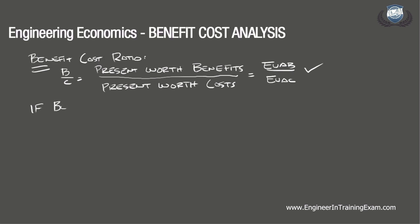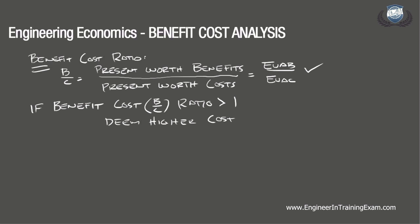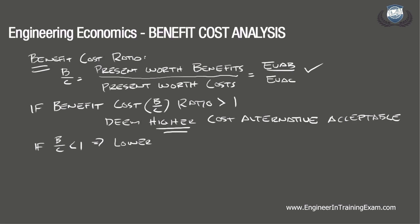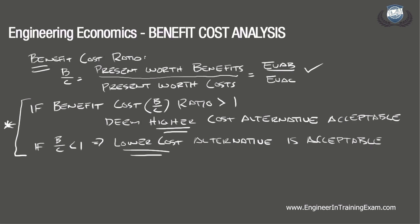Once complete, if the benefit cost ratio is greater than or equal to 1, then we will deem the higher cost alternative as acceptable. If the benefit cost ratio is less than 1, then we will deem the lower cost alternative as acceptable.